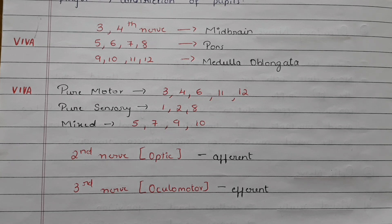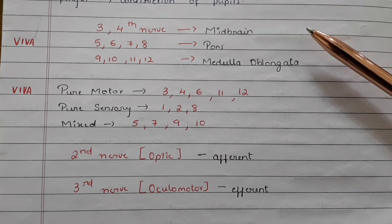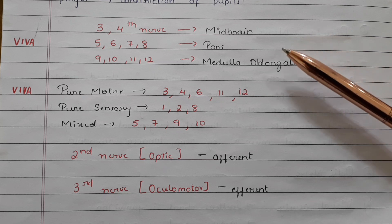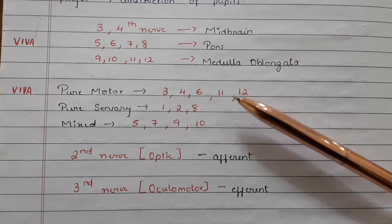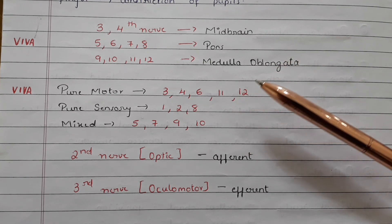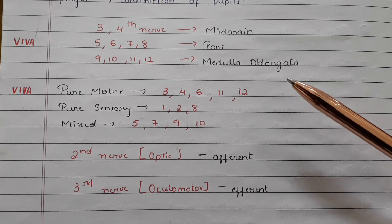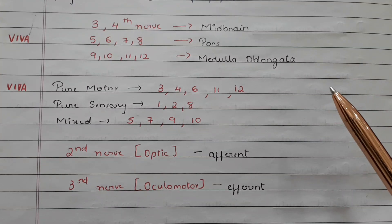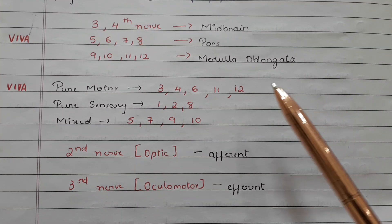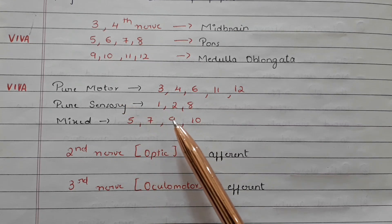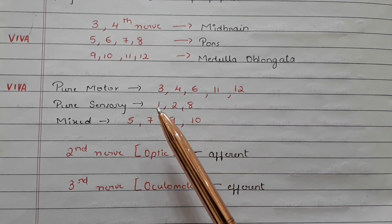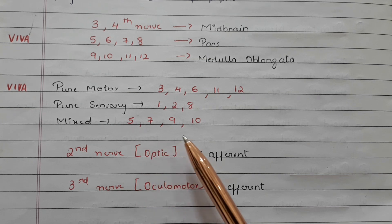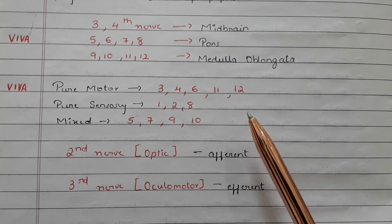A few important viva questions: The third and fourth cranial nerves arise from the midbrain. The fifth, sixth, seventh, and eighth cranial nerves from the pons. The ninth, tenth, eleventh, and twelfth cranial nerves from the medulla oblongata. The third, fourth, sixth, eleventh, and twelfth cranial nerves are the pure motor ones. The first, second, and eighth cranial nerves are the pure sensory nerves. The fifth, seventh, ninth, and tenth cranial nerves are the mixed nerves.